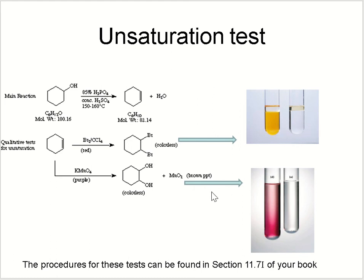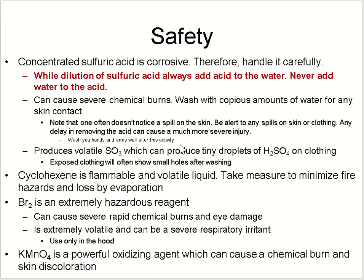If you use the permanganate test, a brown precipitate will form. You can use either one of these tests to verify that your product is cyclohexene and that it contains a pi bond.